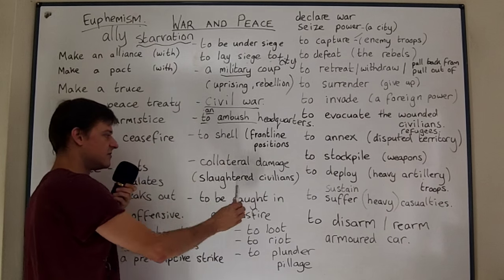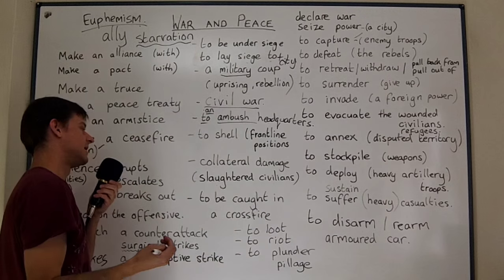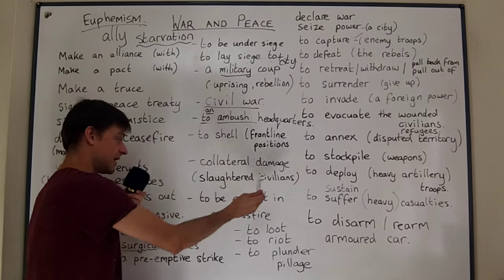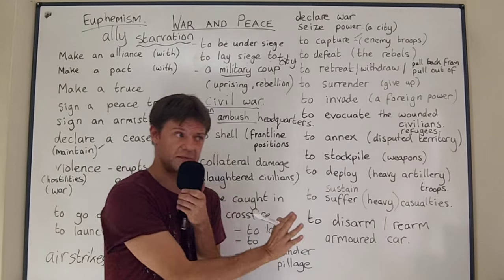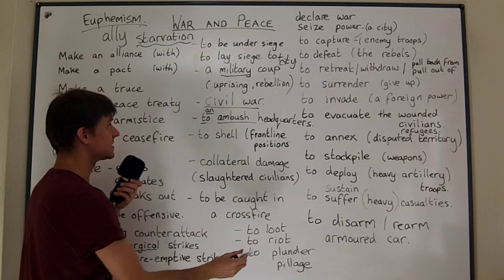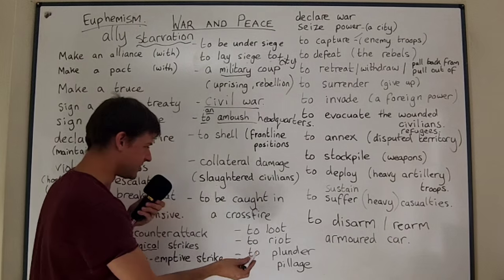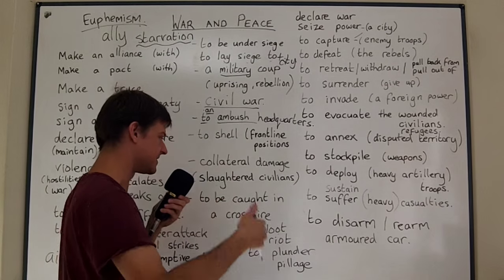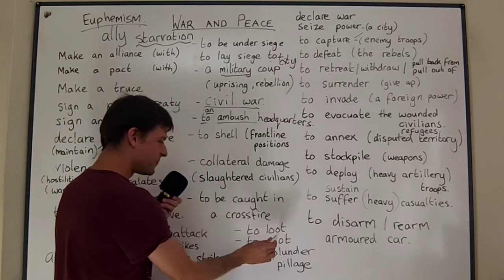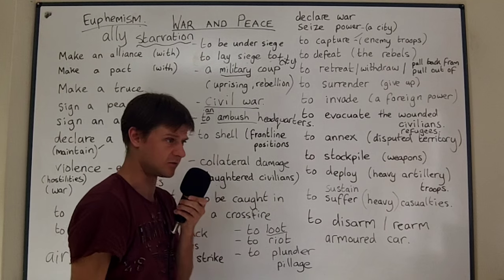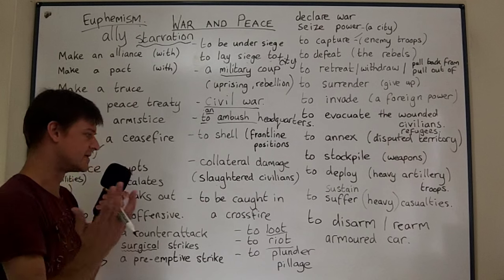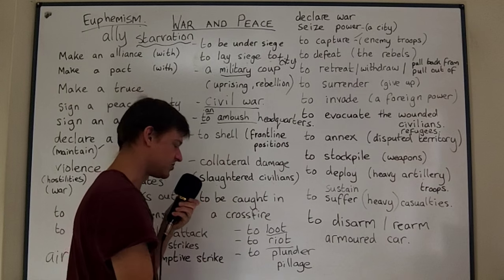Collateral damage is a kind of euphemism for slaughtered civilians — people killed accidentally by the military when they launch an airstrike or fire heavy artillery. To be caught in a crossfire is exactly what it sounds like: there's fire coming from the left and fire coming from the right, lots of bullets flying, and you are caught in the middle. Looting is when people steal from private property and shops when there's no law and order — for example, after natural disasters. Rioting tends to happen in the middle of cities during political demonstrations, when violence erupts and shops are smashed.